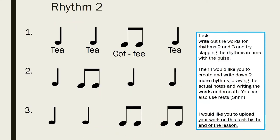Your first task — which I'd like you to write down or type up and upload to Class Charts — is to write out the words for rhythms two and three, and try clapping them in time with a pulse. I've done rhythm one for you: tea, tea, coffee, tea. I'd also like you to create another two rhythms of your own. Write in the actual notes — the dots with the lines, the crotchets and quavers — and write 'tea' and 'coffee' underneath so I can see you understand what you're doing.